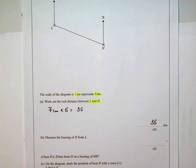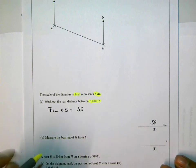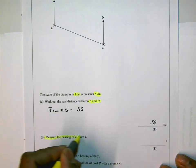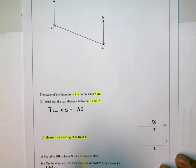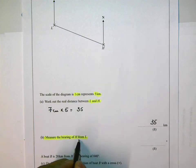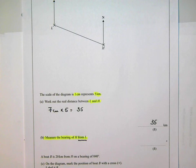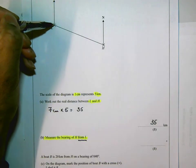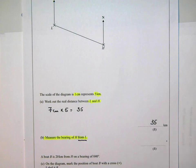I will have to go back up to the diagram itself. The question says measure the bearing of H from L. Measure the bearing of H from L. Now in the question itself, because it says from L, so the bearing of H from L, I'm interested in the angle at L.